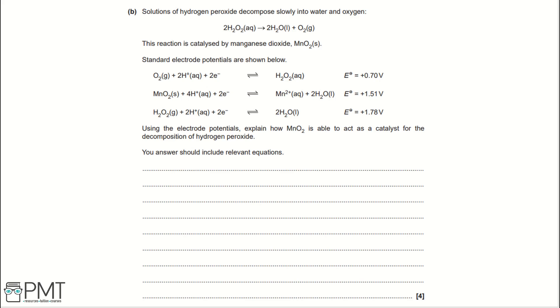Part B. Solutions of hydrogen peroxide decompose slowly into water and oxygen. This reaction is catalysed by manganese dioxide. Standard electrode potentials are shown below. Using the electrode potentials, explain how manganese dioxide is able to act as a catalyst for the decomposition of hydrogen peroxide. Your answer should include relevant equations.